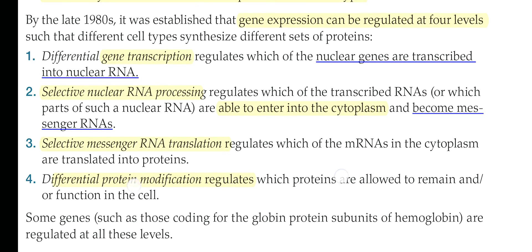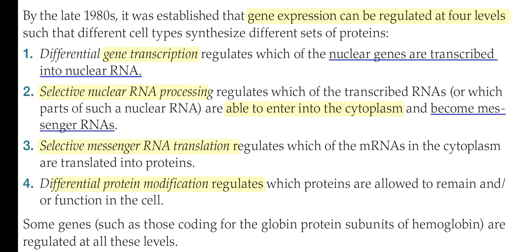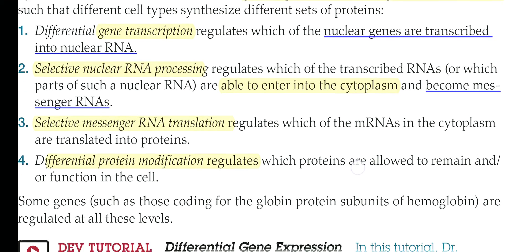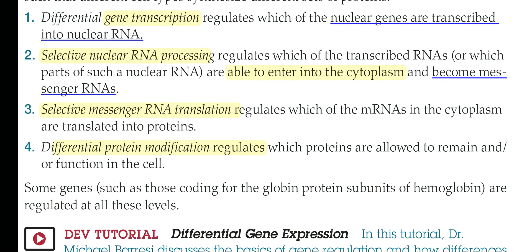Gene expression can be regulated at four levels, as different cell types synthesize different proteins. The first is at the level of transcription, where the genome gets transcribed to RNA, what we call nuclear RNA. That nuclear RNA possesses exonic and intronic sequences. The second is selective nuclear RNA processing — this nuclear RNA must be processed to become functional messenger RNA, and then exported by the RanGTP mechanism. The selection of which functional mRNAs should actually be exported to the cytoplasm to become functionally translated is the second level.